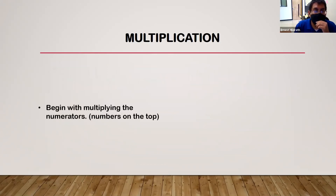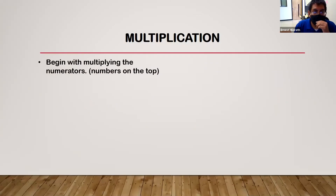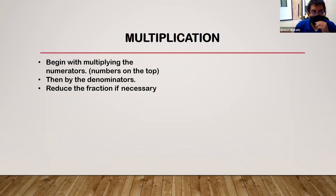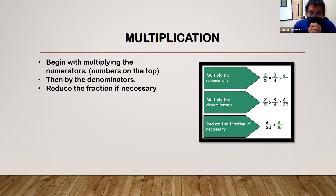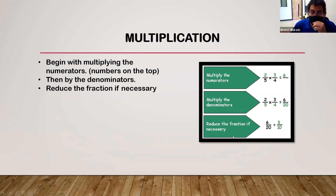For multiplication, multiply the numerators (top numbers) together and the denominators (bottom numbers) together, then reduce the fraction if necessary. Example: two-fifths times three-fourths — multiply the numerators: 2 times 3 equals 6. Multiply the denominators: 5 times 4 equals 20. We have 6 over 20. Dividing both by 2 gives three-tenths as our simplified answer.